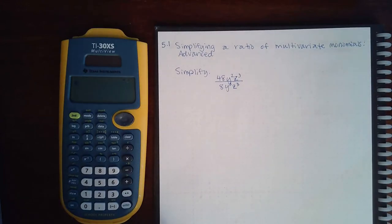Here we have 5.1 simplifying a ratio of multivariate monomials advanced.